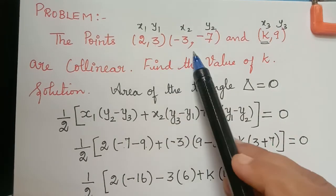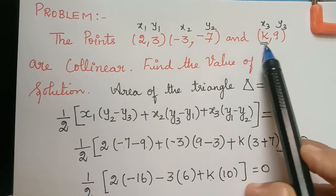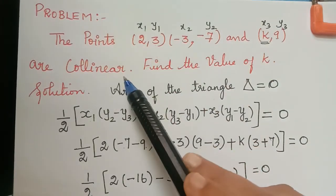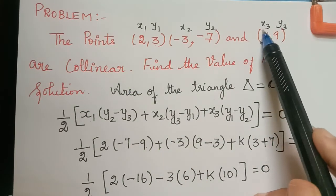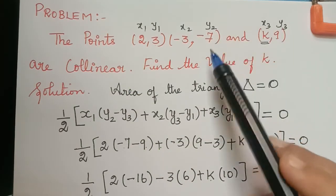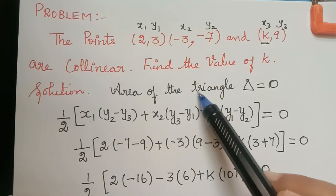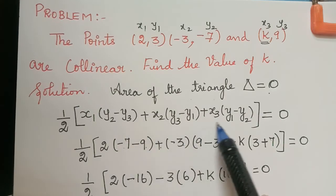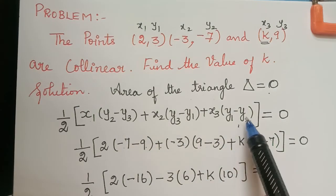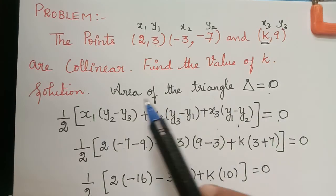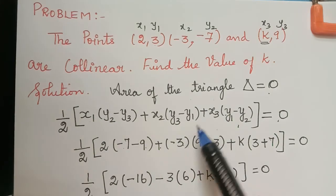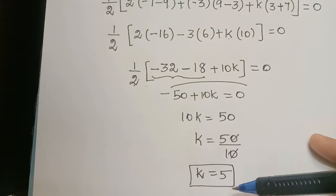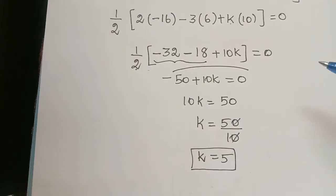They may give three points with one coordinate unknown and the condition that the three points are collinear, asking you to find the value of that unknown. In that case, we know that the area of the triangle will be equal to zero. So we substitute the formula for the area of the triangle equated to zero, plug in each coordinate, simplify, and find the value of k.